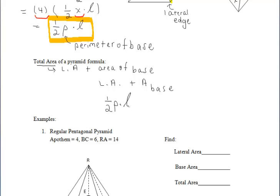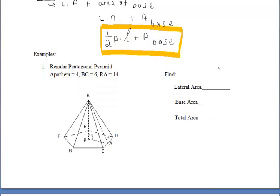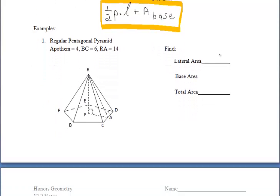To find the total surface area of any pyramid, we take the lateral area — the areas of the triangles — and then add on the area of the one base, whatever shape it may be. So for a regular pyramid: total area equals one half times the perimeter of the base times the slant height, plus the base area.